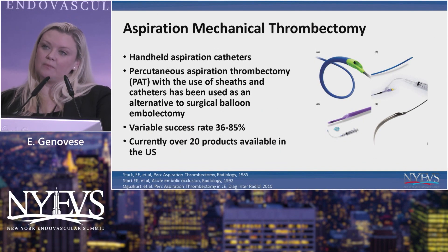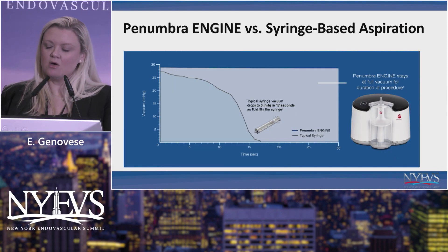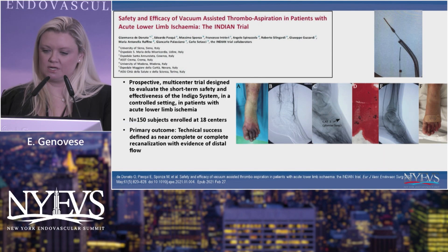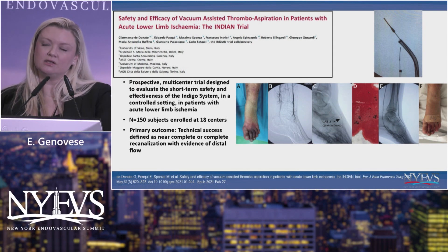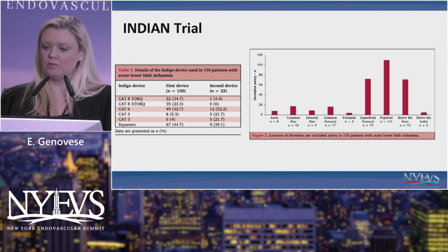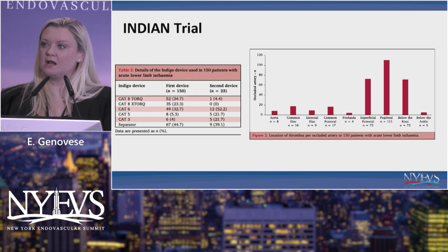There have been a lot of mechanical thrombectomy aspiration catheters — there are over 20 currently available in the U.S. indicated for acute limb ischemia. What really changed the game, at least for me as a vascular surgeon, is the engine that Penumbra came out with. It allows for more continuous aspiration as opposed to releasing suction with a handheld syringe. I'll touch on the INDIAN trial, a prospective trial looking at acute limb ischemia using Penumbra catheters. The distribution of vessels included anywhere from the aorta to below the knee and below the ankle, but a lot of the wheelhouse being in the SFA, the popliteal, and below the knee. A variety of different catheters were used, with a fair amount requiring the separator — an atraumatic device to help break up and pull in thrombus.